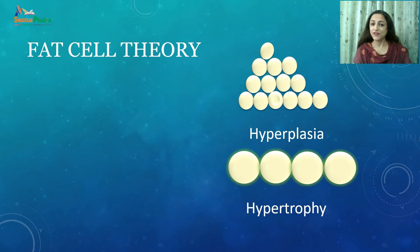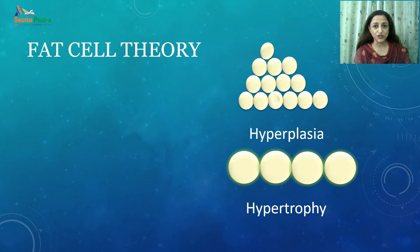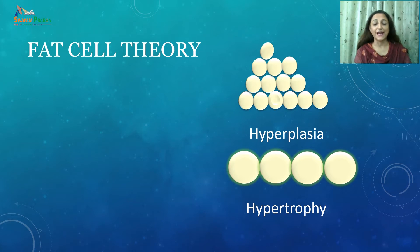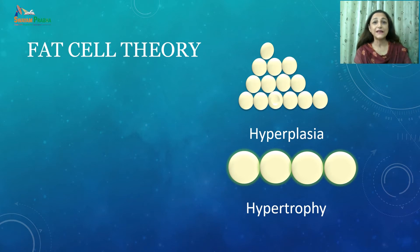Let us study the first theory — the fat cell theory. According to this theory, adipocytes can be distributed throughout the body, forming a reserve depot of energy which is very elastic in nature. This depot can expand in two ways: either by an increase in the number of fat cells or by an increase in the size of the fat cell. The number of fat cells is partly influenced by genetic inheritance and partly by our eating habits.